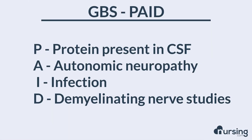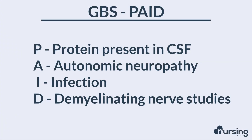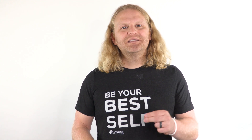Now for the PAID. The P stands for protein being present in the CSF — they'll draw a CSF sample and protein's going to be in there. The A stands for autonomic neuropathy, which affects things like blood pressure, heart rate, sweating, bowel and bladder emptying, and digestion. The I stands for infection; these patients might experience more infections than your regular patient. The D stands for demyelinating nerve studies — GBS is a demyelination syndrome, and we use these studies to detect demyelination of the myelin sheath around our neurons.